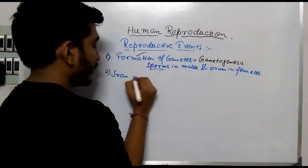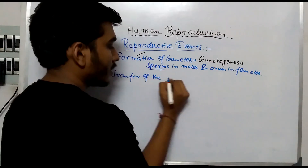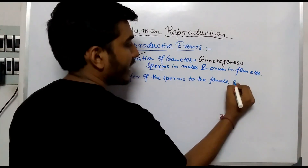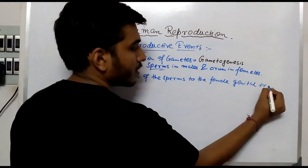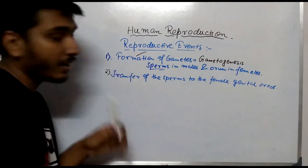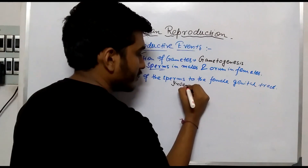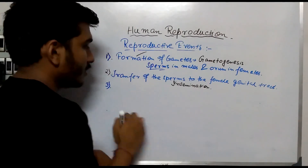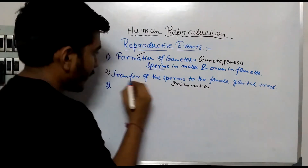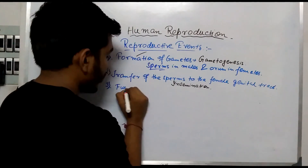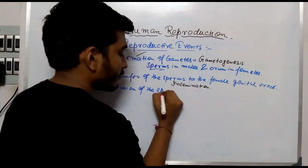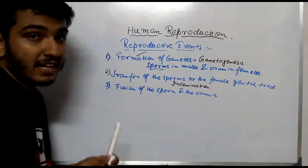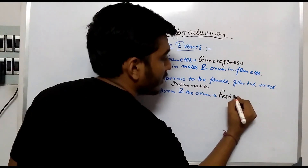The transfer of the sperm to the female genital tract. This process — the transfer of sperm to the female genital tract — is known as insemination. That is the second part. Third is the fusion of the sperm and the ovum. This process is known as fertilization.